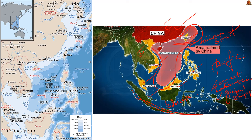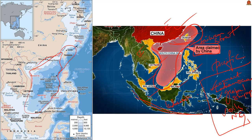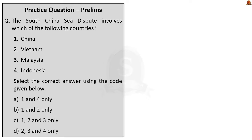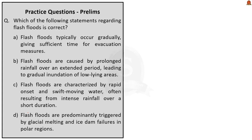China claims nearly all of the South China Sea, citing historical reasons, which overlaps with the territorial waters of Vietnam and the Philippines. The Paracel Islands are claimed by China, Taiwan, and Vietnam; the Spratly Islands are claimed by China, Taiwan, Vietnam, Brunei, and the Philippines; and Scarborough Shoal is claimed by the Philippines, China, and Taiwan. Even though Indonesia borders the South China Sea, it is not part of the dispute. The correct answer for this question is Option C — 1, 2, and 3 only.